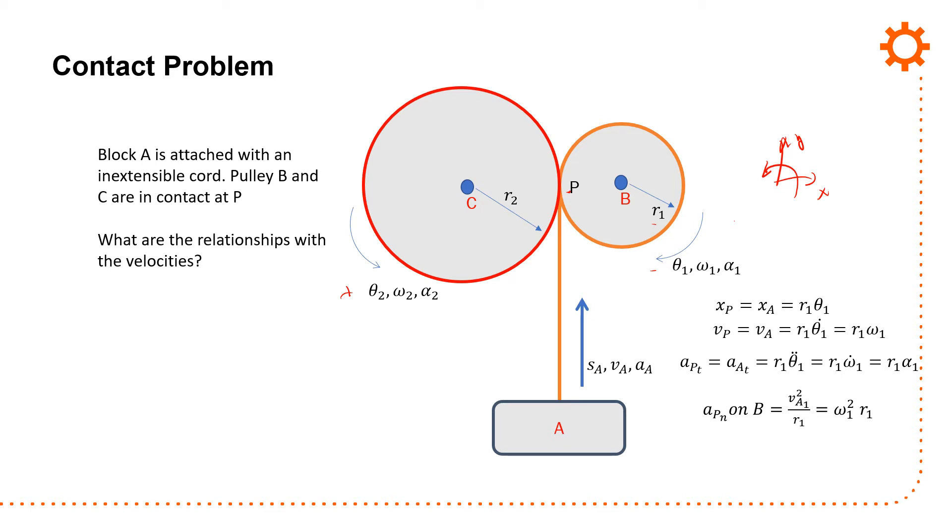So you can do the same thing: xP equals xA equals r2 theta 2. vP equals vA equals r theta dot, r2 omega 2. Acceleration tangential equals r theta double dot, r omega dot, or r2 alpha 2. Excuse me, r2 alpha 2. So you can see sort of this relationship in terms of the tangential components as being something that's going to hold true.